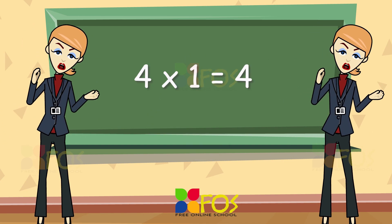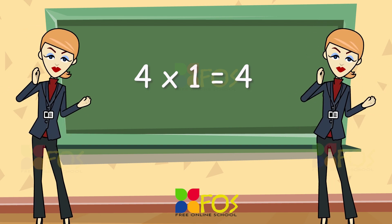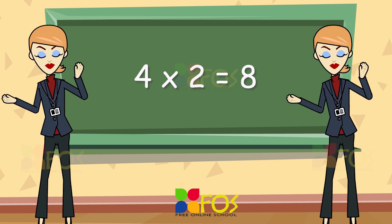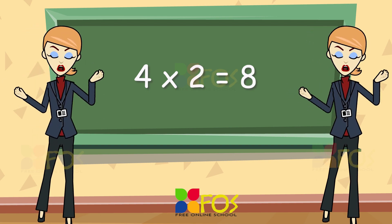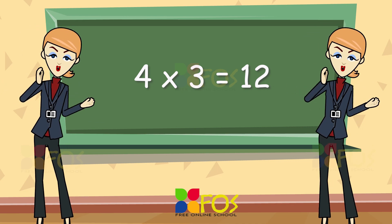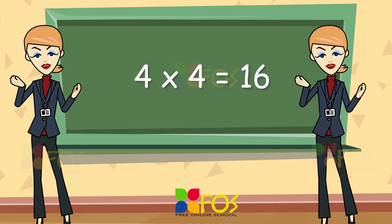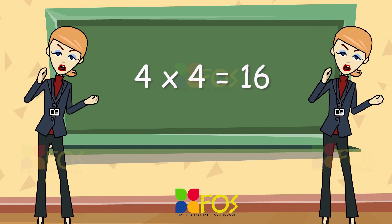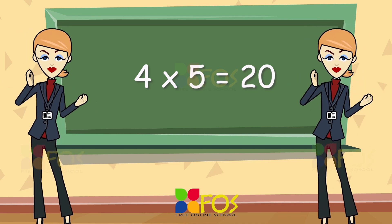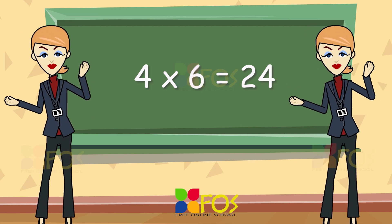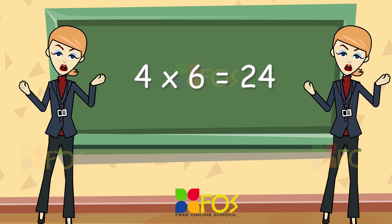Four ones are four. Four twos are eight. Four threes are twelve. Four fours are sixteen. Four fives are twenty.